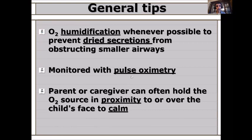Starting with general tips: oxygen should always be humidified. Without humidification, you deliver dried flow, which causes dry secretions and may obstruct the airway. No oxygen should be used without pulse oximetry to monitor the level. Remember, oxygen is a toxic substance — it is therapeutic but very dangerous. Do not give extra oxygen beyond what is required. Having a pulse oximeter before delivering oxygen to the baby is vital.